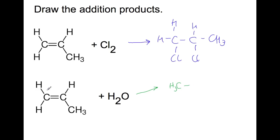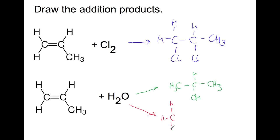For our next reaction we get two different products because we have an asymmetrical alkene. We get one product where the H adds onto one carbon and the OH adds onto the middle carbon. We get a second product where the OH adds onto the end carbon. So here we have two different products.